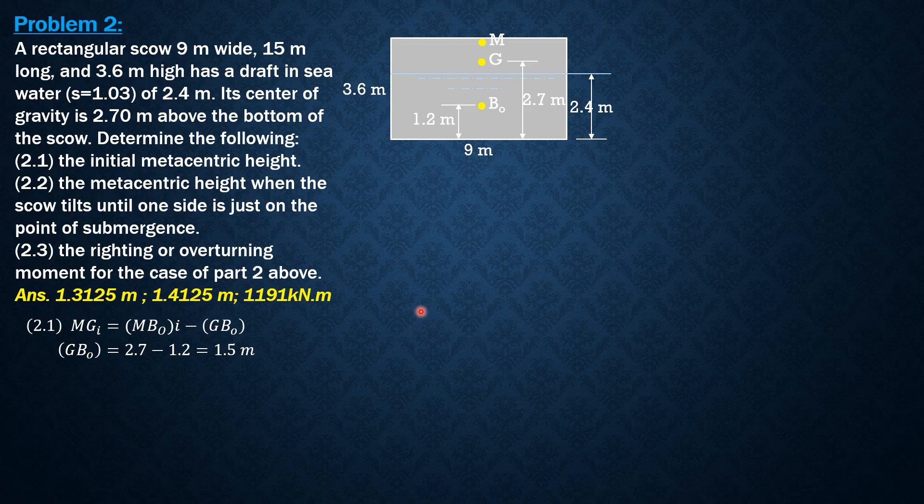B² over 12D. Supposedly times the quantity (1 + tan²θ/2), but theta is 0 for this upright position, so it reduces to B²/12D for rectangular parallelepiped bodies.